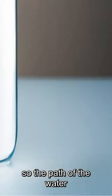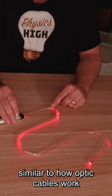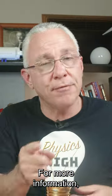So the path of the light through the water column is actually a series of straight lines in a zigzag fashion, similar to how optic cables work, with light zigzagging their way through it.